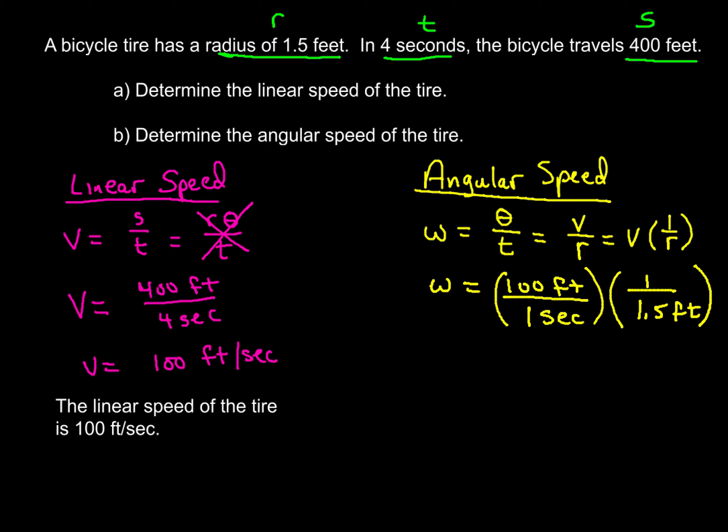And in dimensional analysis, you want to make sure as you're converting units, you want to make sure that you get rid of certain units. So when we rewrite our formula, all we're doing is substituting in, but for our linear speed for the v, we're going to write it as 100 feet over one second, because that's the same thing as 100 feet per second.